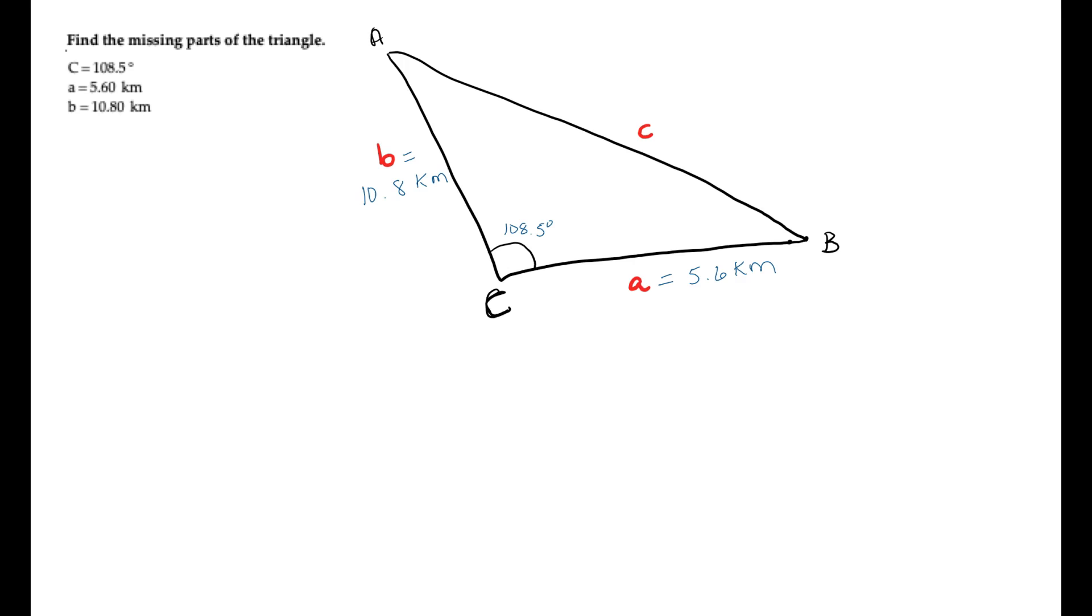So we have to find side length C. We have to find angle A, we'll color it there in blue, and then we have to find angle B, and we'll color that there in red.